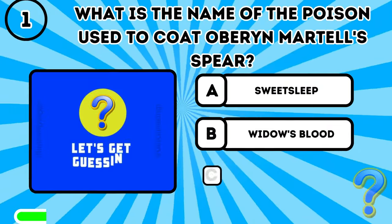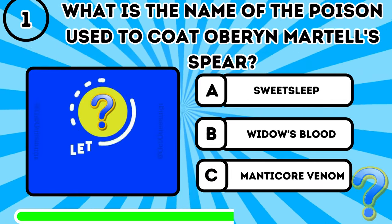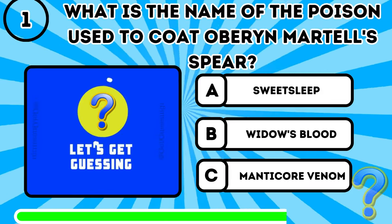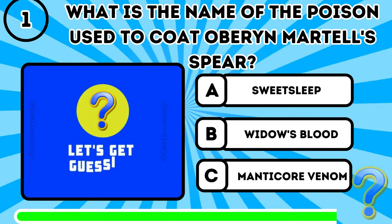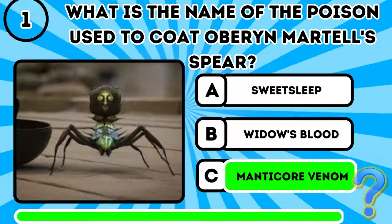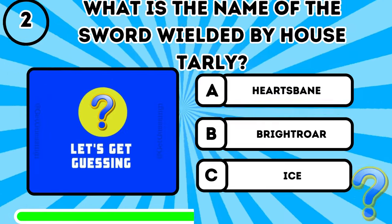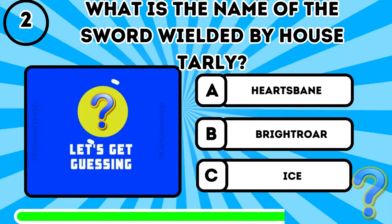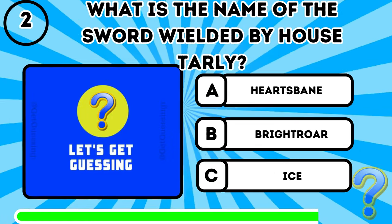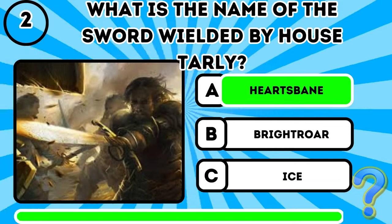Question 1: What is the name of the poison used to coat Oberyn Martell's spear? Question 2: What is the name of the sword wielded by House Tarly? The answer is Heartsbane.